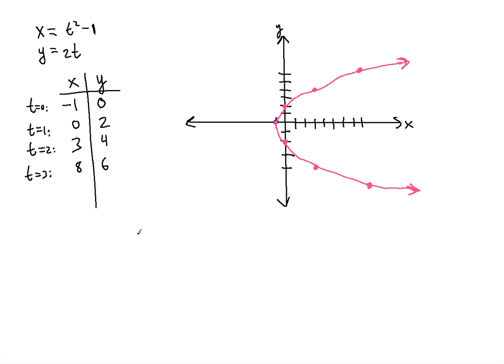So x equals t squared minus 1, y equals 2t. Notice right away that I can solve for t here in the y equation. So dividing both sides by 2, we will have t equals y over 2.